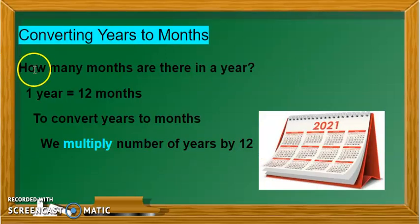Let us see how many months are there in a year. We know that there are in one year 12 months. So, to convert years to months, we will multiply the number of years by 12.